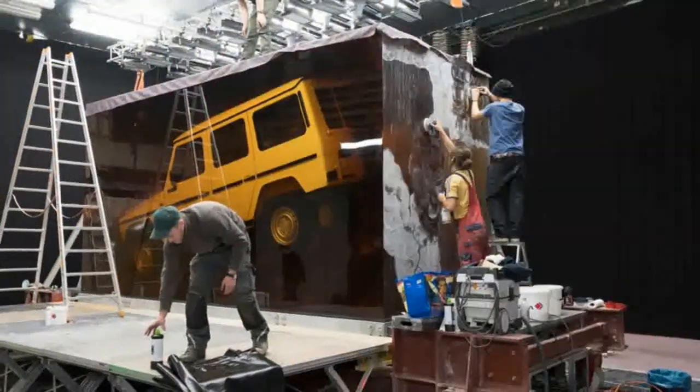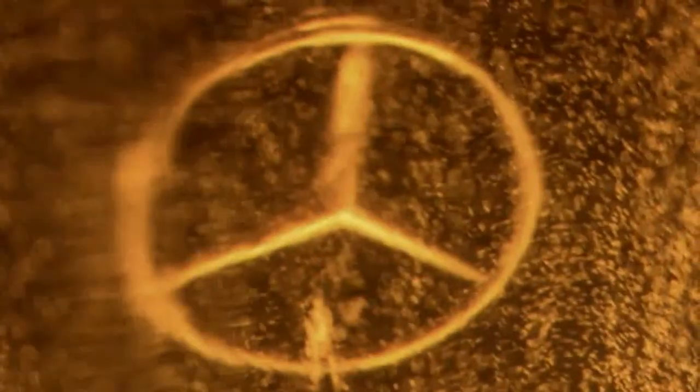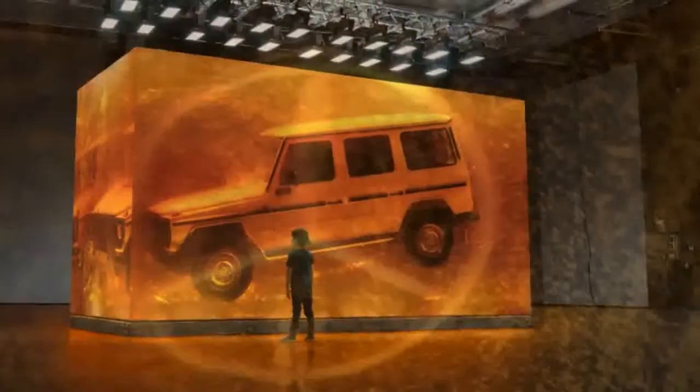Well, the Stuttgart company will greet visitors by showcasing the first production G-Class from 1979 encased in a massive block of amber-colored synthetic resin at the entrance to Cobo Hall. The installation, teased in a 53-second video released last month, weighs nearly 49 tons.